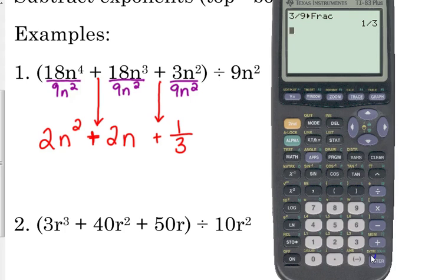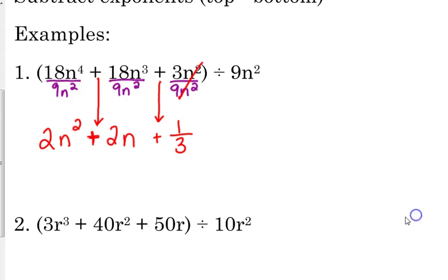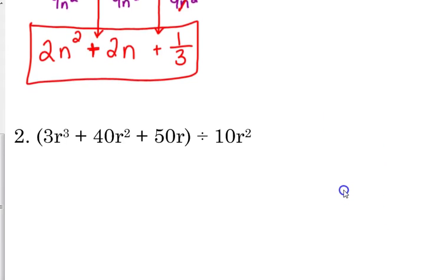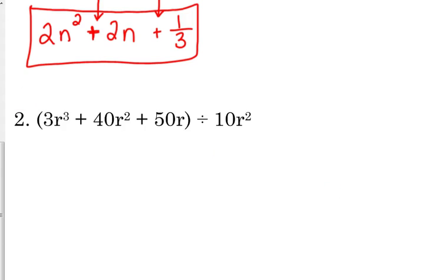And n squared over n squared, 2 minus 2 is 0. Anything to the 0 power is 1, so those n squares cancel right there. So that is our final answer. That is that polynomial divided by 9n squared. Simple enough, right?